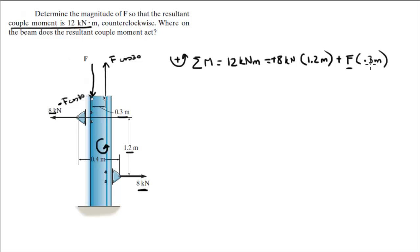So we have an equation with only one variable, F. So if you solve for F, you're going to get that F is equal to 9.24 kilonewtons. And that is the force required for this beam to have a couple moment of 12 kilonewtons per meter. Now,